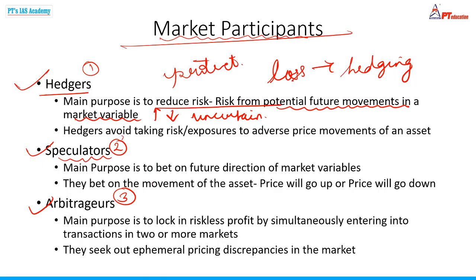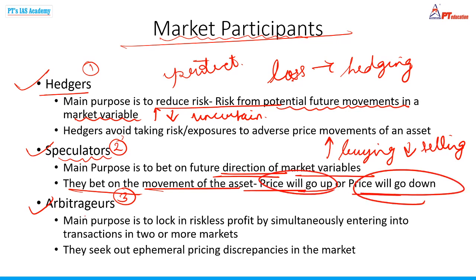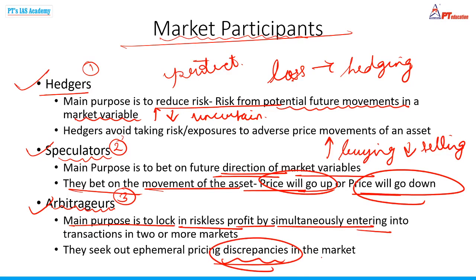Speculators — their main purpose is to put money in any direction. If they think the market will go up based on their research, they go to buying; if they think it will go down, they go to selling. They bet on the movement of the asset — either betting on the future direction if the price will go up or if the price will go down. Last are arbitrageurs, who basically seek riskless profit by exploiting market pricing discrepancies — a price difference — as an opportunity to profit.